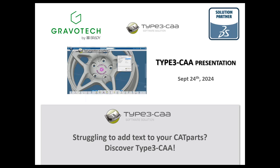Type 3 CAA is one of those solutions. It's the add-on for text integration in CATIA, developed in partnership with Dassault Systèmes since 2003. During the demo you will be muted, but if you have questions please write them in the chat or in the GoToMeeting question window, and I will answer all questions at the end of the presentation.